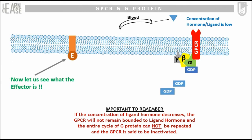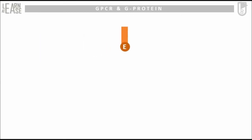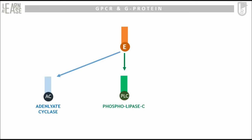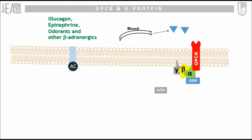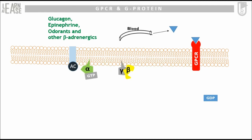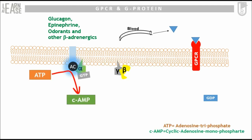Now let us see what the effector is. The most widely found effector components associated with trimeric G-protein assemblies are adenylate cyclase, phospholipase C, and ion channels — the first two are enzymes. The assembly with adenylate cyclase effector in its inactive form is shown. Hormones such as glucagon, epinephrine, odorants, and other beta-adrenergics can activate the GPCR belonging to this assembly. When these specific ligands bind to GPCR, a conformational change allows the alpha subunit to replace GDP with GTP, activating the cycle and eventually activating the effector adenylate cyclase. Activated adenylate cyclase converts ATP to cyclic AMP, which is the second messenger. Cyclic AMP further activates a cascade of reactions to induce the desired effect in the cell.